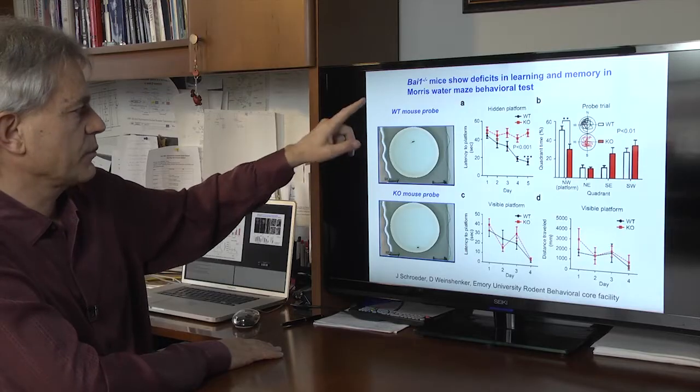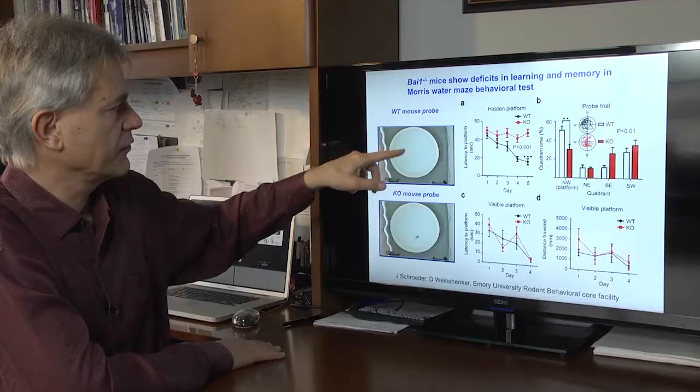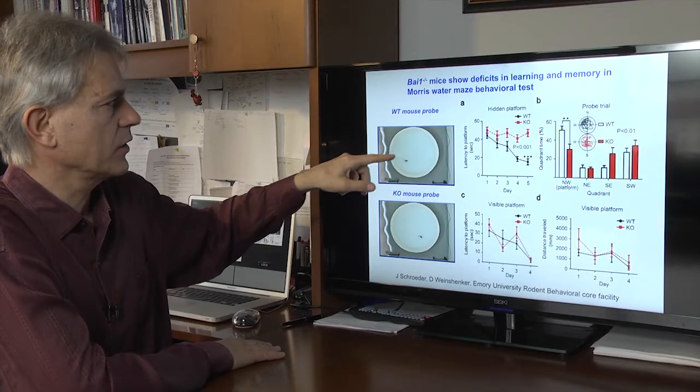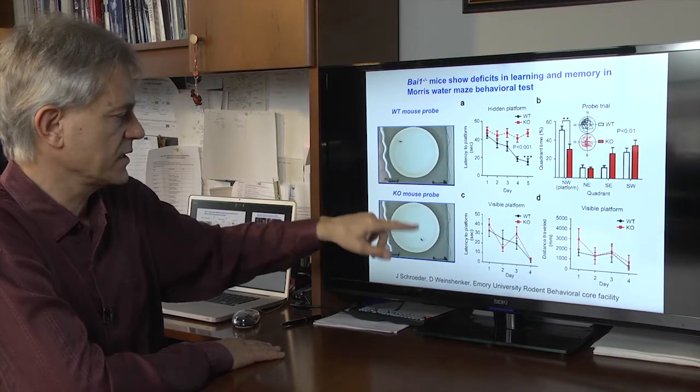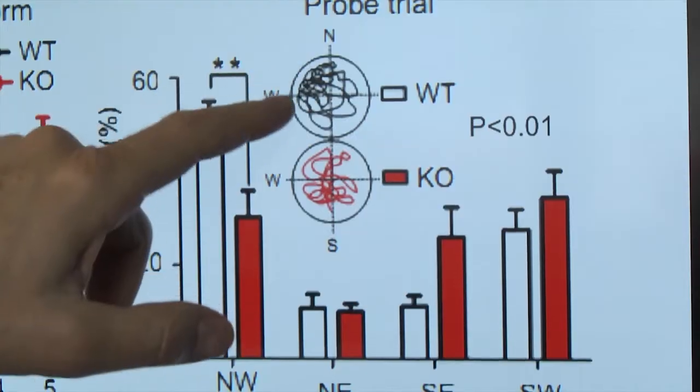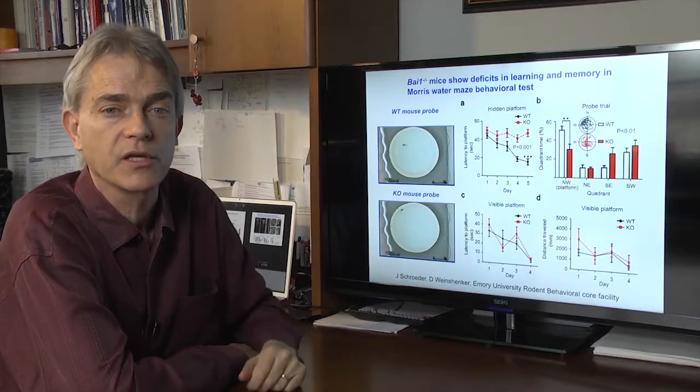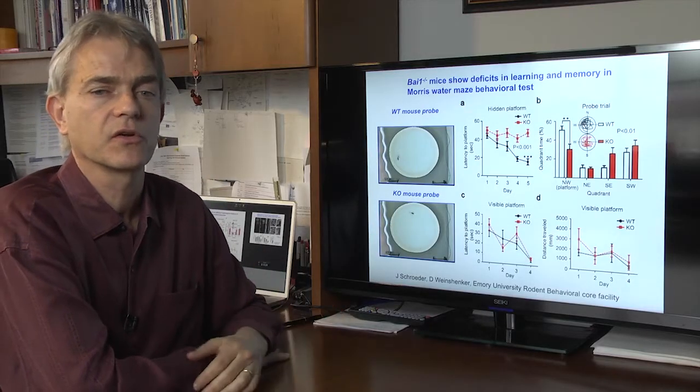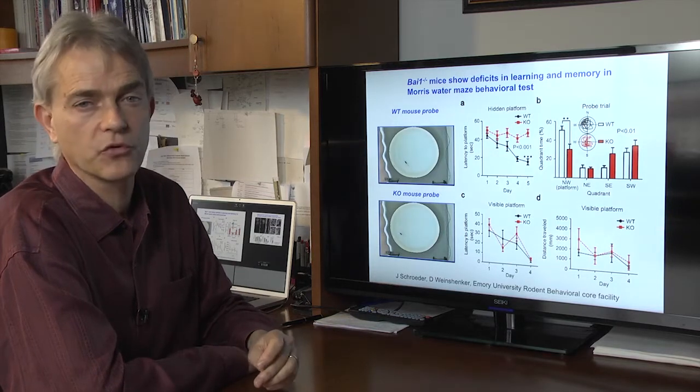This is a wild type mouse, this is a knockout mouse. The wild type mouse will swim and rapidly focus on this area because it remembers where the platform is, whereas the knockout mouse is still swimming about anywhere to find it. The wild type animal spends most of its time in the quadrant where the platform used to be, whereas the knockout mouse is still swimming randomly, suggesting that it did not acquire any spatial memory of where the platform used to be.